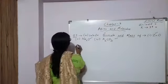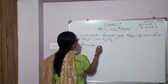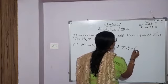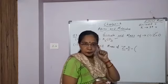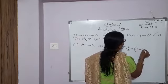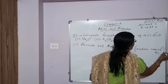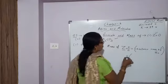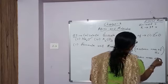First, let's find the formula unit mass of zinc oxide. What are the elements present here? Zinc and oxygen. How many zinc atoms? One. So: one times the atomic mass of zinc, plus the second element oxygen — how many atoms? One. So one times the atomic mass of oxygen.